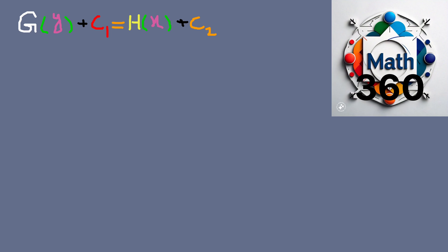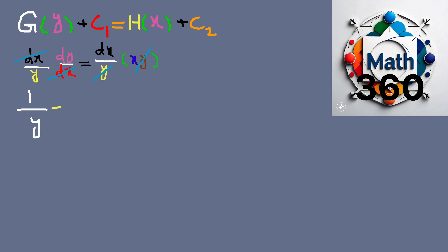We rewrite this equation by dividing both sides by y and multiplying both sides by dx, giving 1 over y dy equals x dx. Now the variables are separated — y and dy are on one side, and x and dx are on the other side.